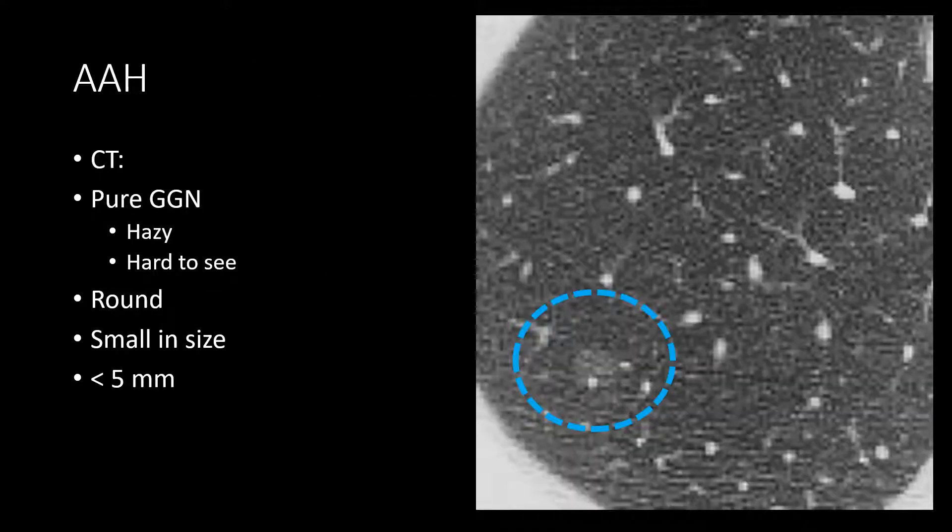On CT, AAH lesions appear as pure ground glass nodules — very low in attenuation, somewhat hazy and difficult to see. The example shown demonstrates a very vague ground glass nodule that would be very difficult to see without thin axial one-millimeter slices. They tend to be very round and small, typically less than five millimeters.